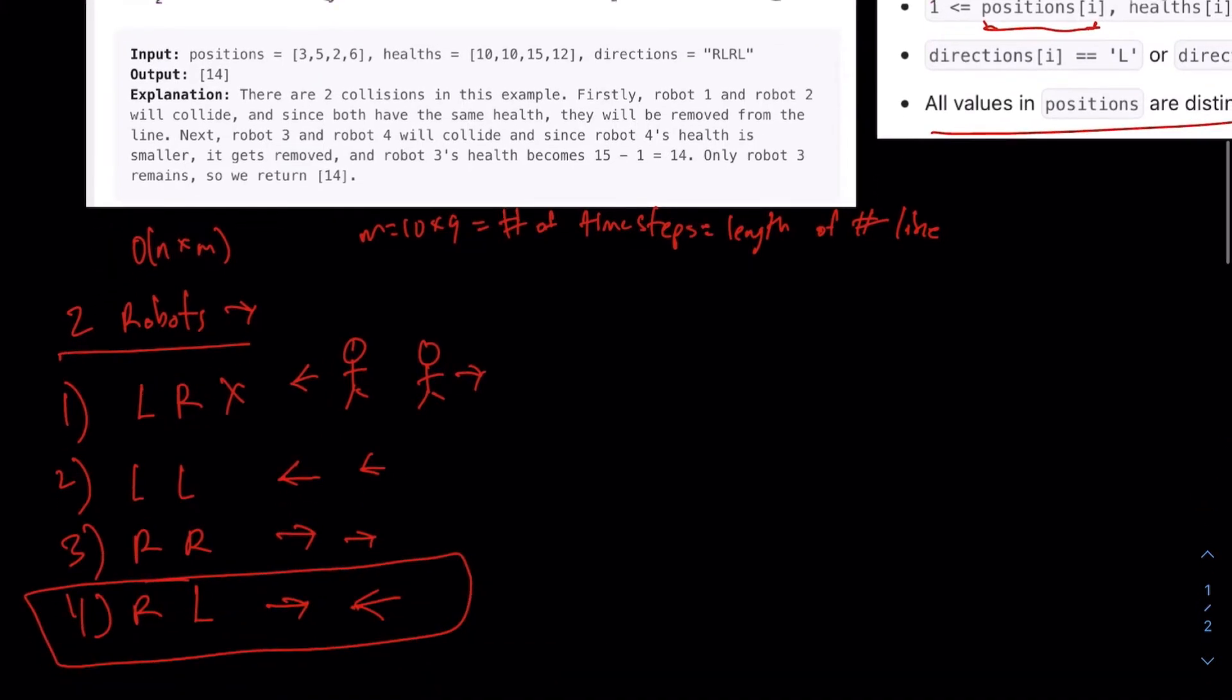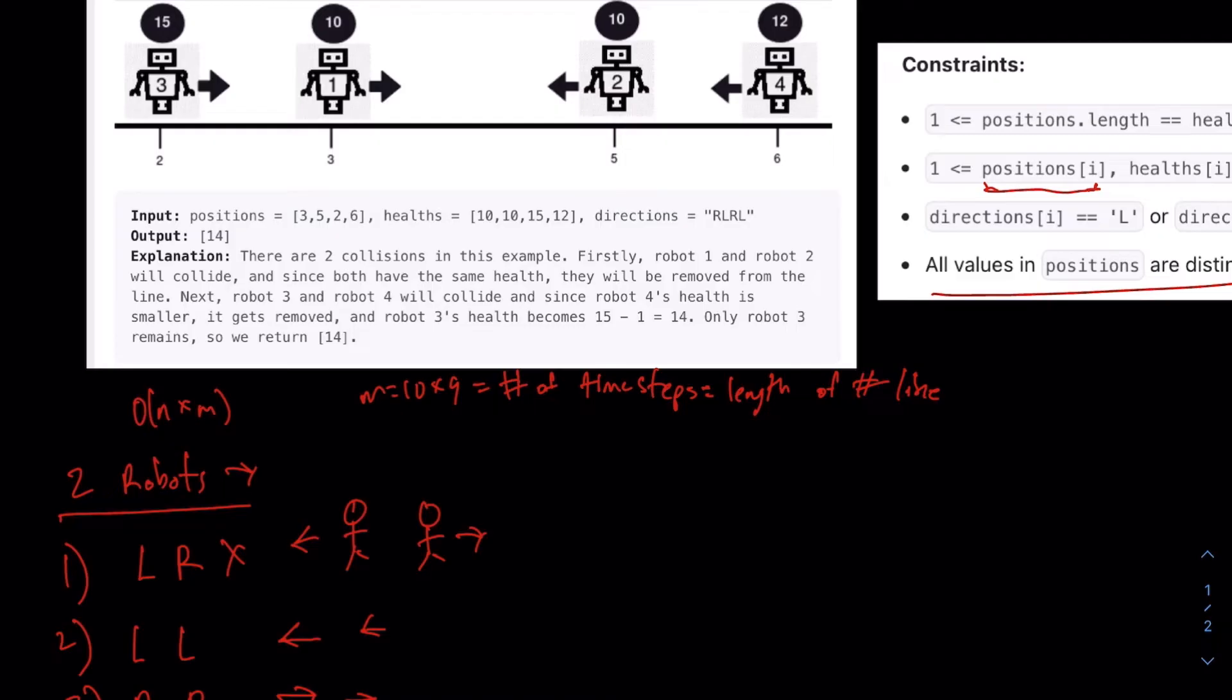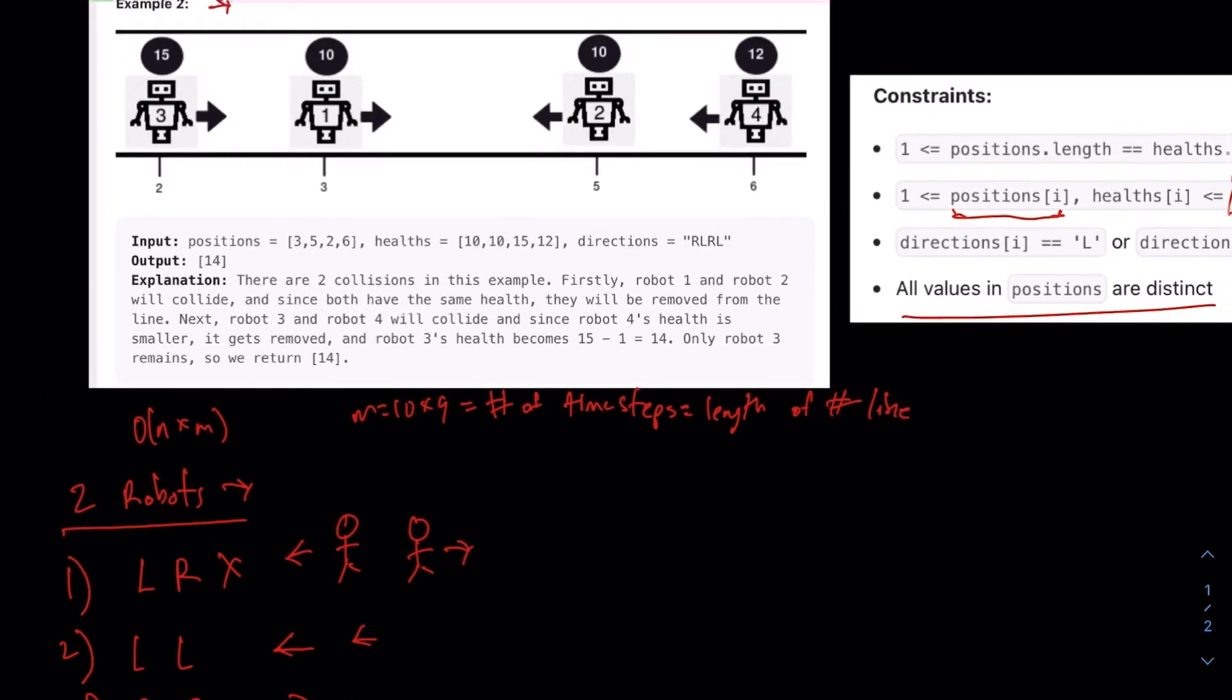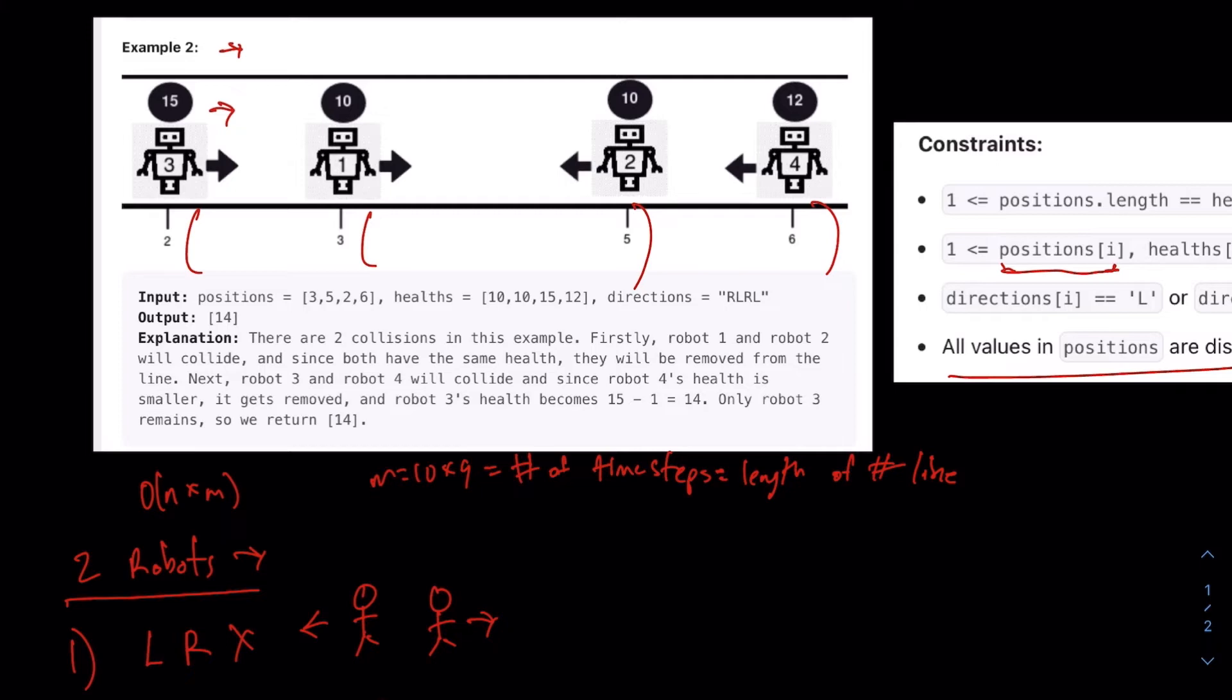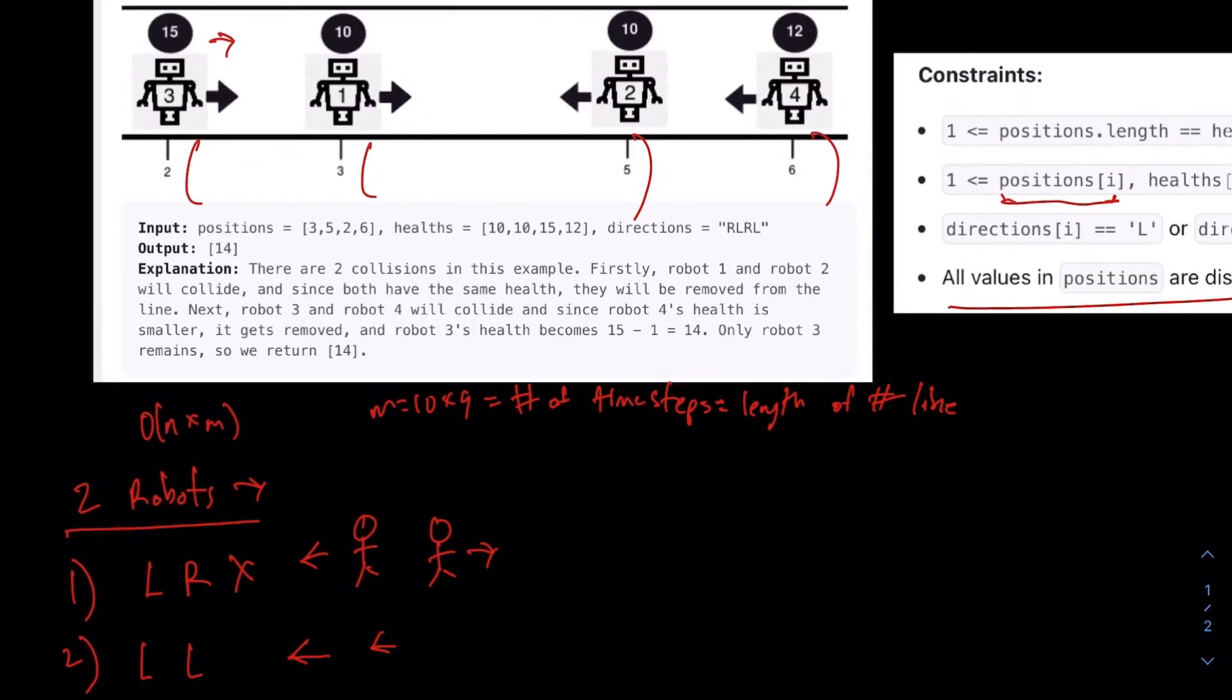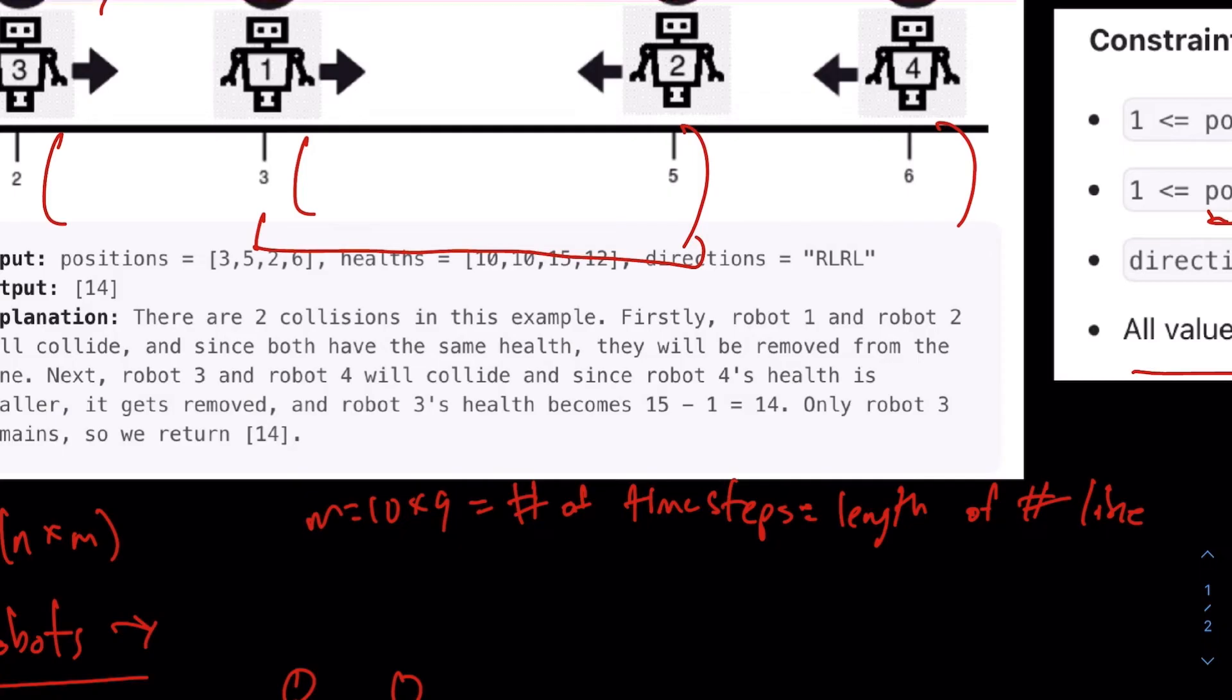Because the closest ones are the ones that will actually collide first, and then after they collide we can compute from there. And if we take note of that, all of a sudden this problem becomes very similar to, if you guys have ever done something like valid parentheses or ensuring that the parentheses line up properly, we can just consider the right direction to be a left parentheses, an opening parentheses, so here and here, and the left direction to be an ending parentheses. And here, the reason why we can do something like this is we essentially want to break the parentheses that are closest together.